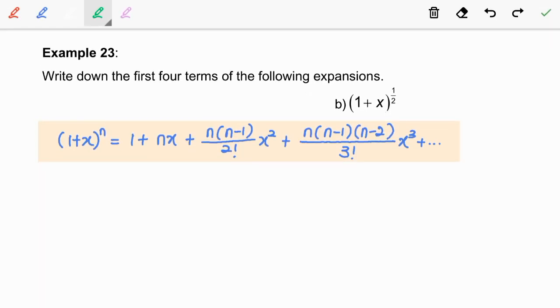Next, let us move on to question B: 1 plus x to the power of half. Here, the power number given is a fraction, 1 over 2. So we are going to use this binomial formula.